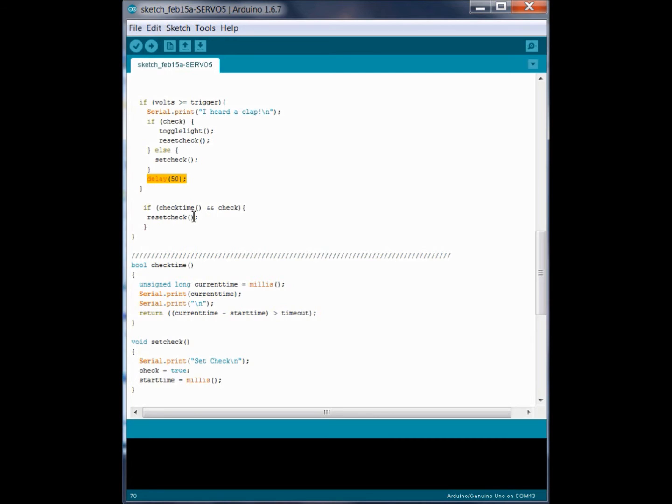The amount of time it takes the code to run. And wait just a second to hear another clap. If one clap happens, if check is true and check time has elapsed. So, there's been too much time. Then it's going to reset the check. So, you need to have two claps to get it to work. So, if check is equal to true and it hears a sound above the trigger. Then it does our toggle light function and also resets check.